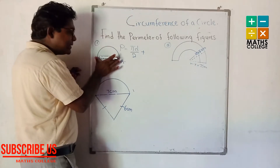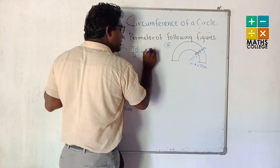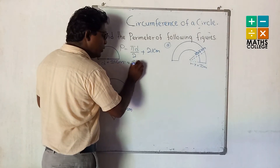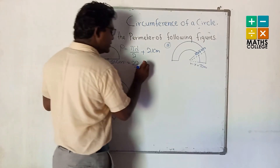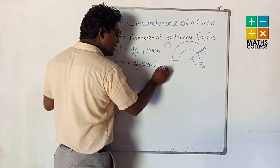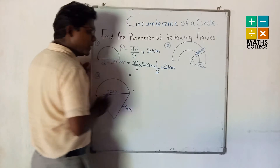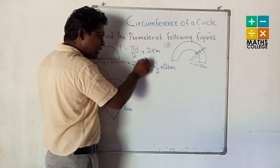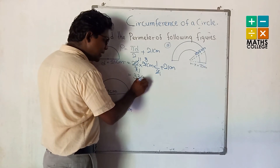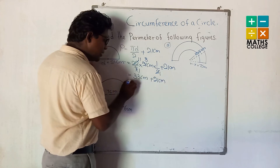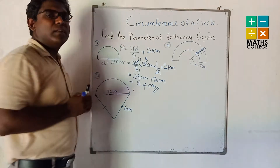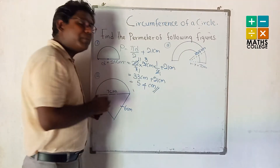The straight line segment is the diameter: 21 cm. So we write π is 22/7, D is 21 cm, divided by 2, plus 21 cm. Cancel 7 into 21 gives 3, cancel 2 into 22 gives 11. So 11 multiplied by 3 equals 33 cm, plus 21 cm, equals 54 cm. The perimeter of this semicircular lamina is 54 cm.